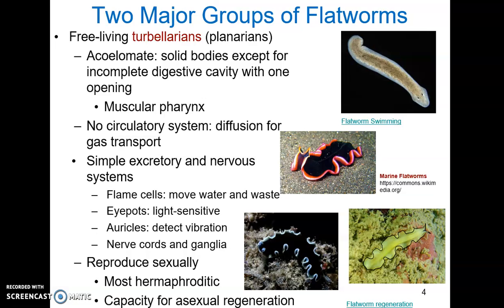Towards the anterior end of the organism, we have concentrated nervous structures and tissues. Eye spots, which are light-sensitive — turbellarians tend to prefer the dark. Auricles are structures that jut out from the anterior end; they sense vibration and can also contain chemosensory cells. Flatworms also have nerve cords and ganglia.